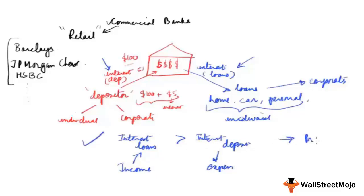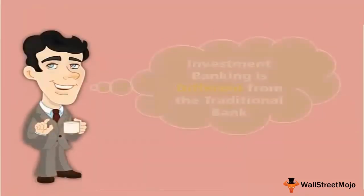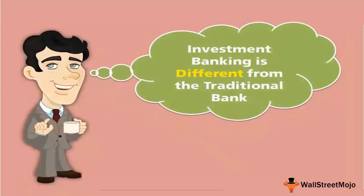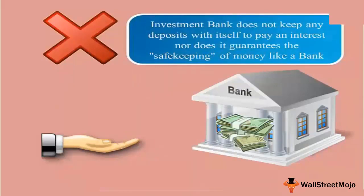The bank is profitable when the interest it earns on loans is greater than the interest it pays on deposits. This is traditionally a low-risk business model, which is what we call a commercial or retail bank. With that understanding, let's now look at what investment banking is. Investment banking is fundamentally different from commercial banking — investment banks do not take deposits, nor do they act as a guarantee for safekeeping depositors' money.